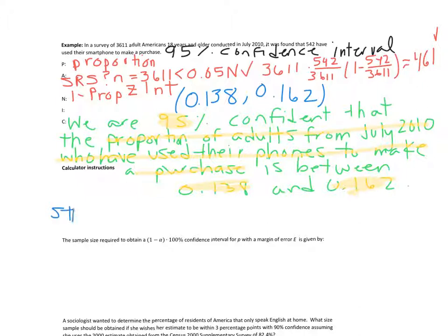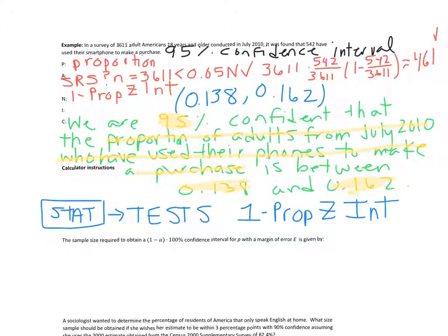Okay, and then if we wanted to write out some calculator instructions, remember to find that, you guys hit the STAT button. You go to the test tab, and then you find 1 prop z int, and then you fill in the information, x, n, and the confidence level.